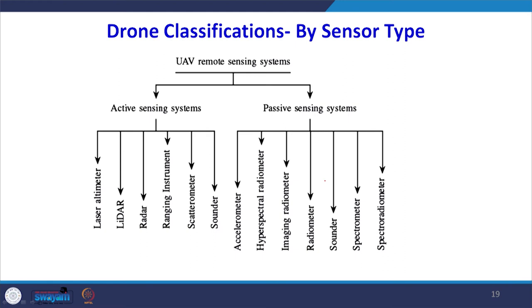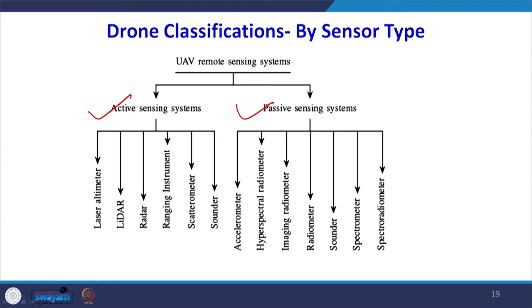According to the sensor systems and payload — a very important component in all drones — there are two broad classifications: the active remote sensing system and the passive remote sensing system. In active and passive remote sensing systems, which we have learnt in previous lectures, active sensor systems have their own source of light to illuminate the object. Different categories include laser, lidar systems, and radar systems and sounders.